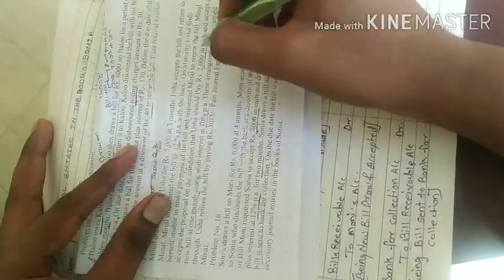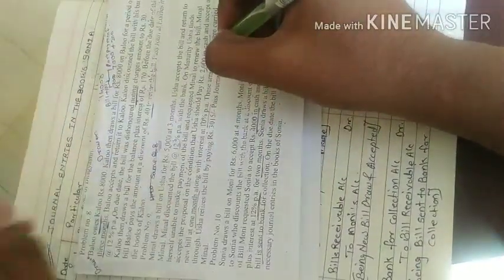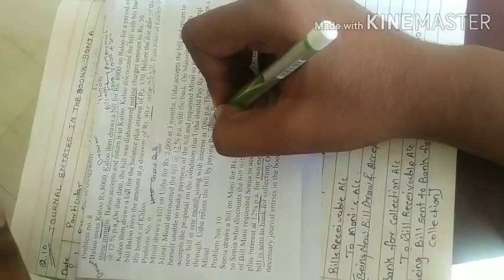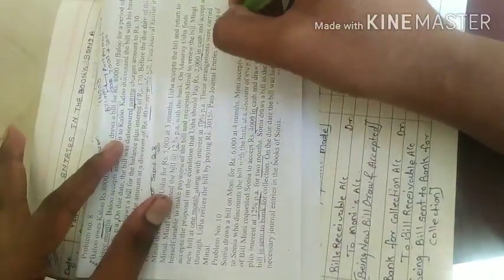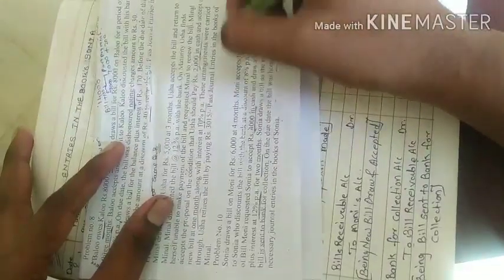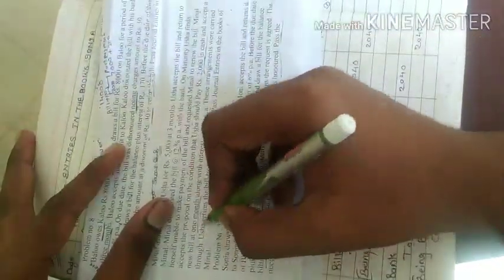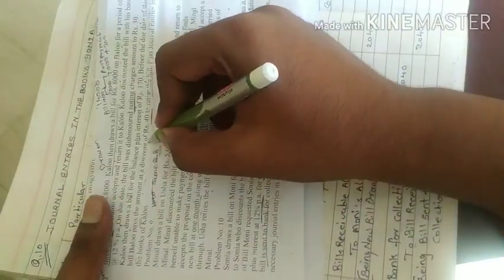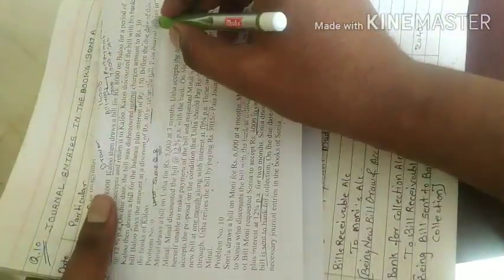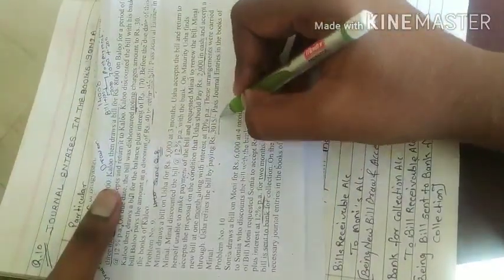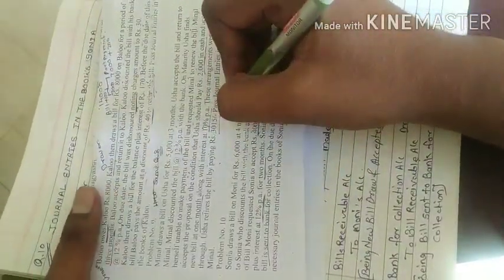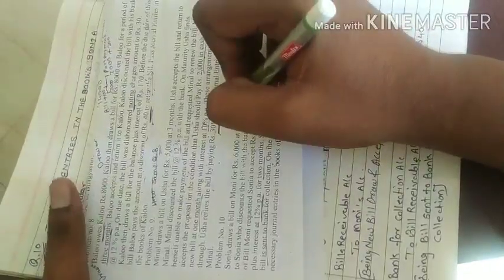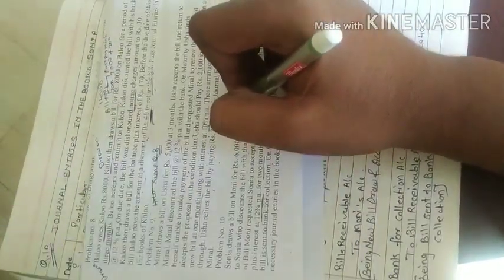And accept a new bill at one month along with the interest 10% per annum. Total 5,000 bill, 2,000 cash paid, 3,000 plus 10% interest for one month. So interest calculation, 3,000 into 10 upon 100 into 1 upon 12. This agreement was carried through, Usha retire the bill. This was 40 discount, 3,015 paying here. Discount amount and payment cash amount, just difference with price, that correct.